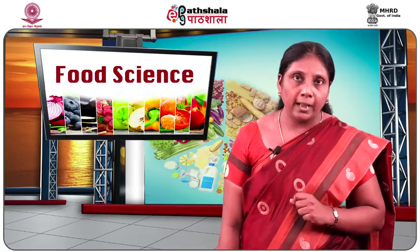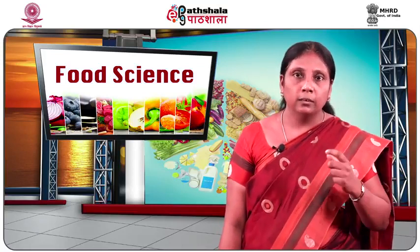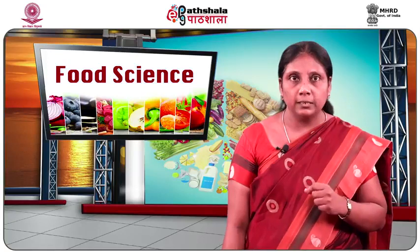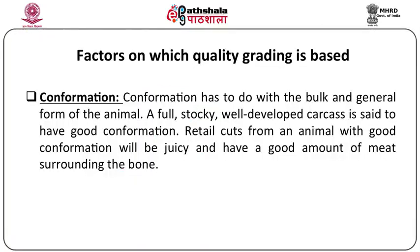There are certain factors on which meat is graded. There are three major quality aspects: conformation, finish, and quality. Conformation has to do with the bulk and general form of the animal. A full, stocky, well-developed carcass is said to have a good conformation. Retail cuts from an animal with good conformation will be juicy and they have a good amount of meat surrounding the bone.